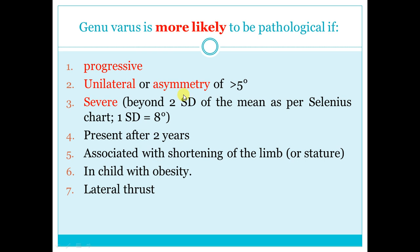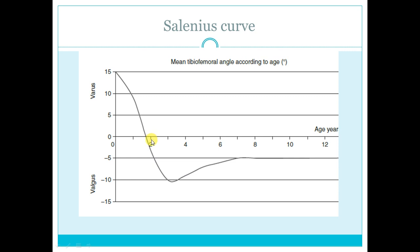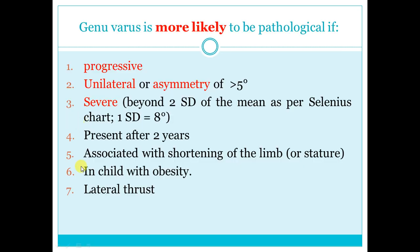Severe — the word 'severe' means 2 standard deviations shift; 1 standard deviation means 8 degrees. For example, at 2 years the child should be rectus; if he is 16 degrees valgus, this is severe — two standard deviations. Associated complications like limb-length discrepancy, in-toeing, or lateral thrust are also indicators of being outside the normal Salenius curve.